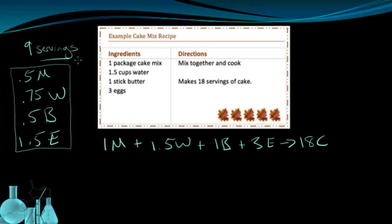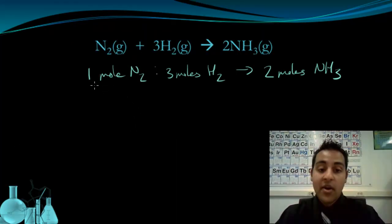This should make sense because if I want half the amount of cake, I should use half the amount of ingredients. Now let's take this idea and bring it back to that balanced equation making ammonia. So I have one mole of nitrogen plus three moles of hydrogen gives me two moles of ammonia. I can scale this up and down as well however much I want.